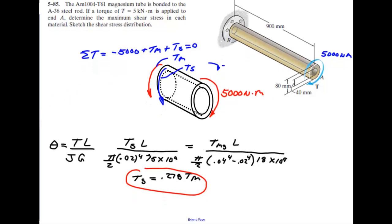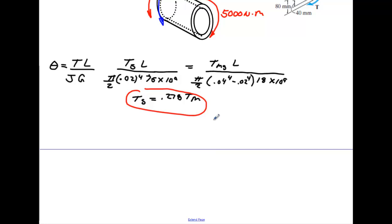If you do that, you will find out quickly. You can solve for the torque of each and you're going to get a value of approximately. The torque of the steel is about 1087 newton meters. And the torque of the magnesium is going to be approximately 3913 newton meters. Okay. So there are your two torques.